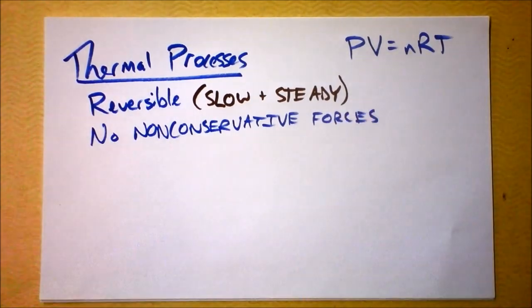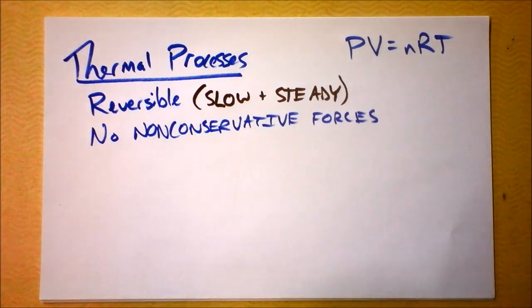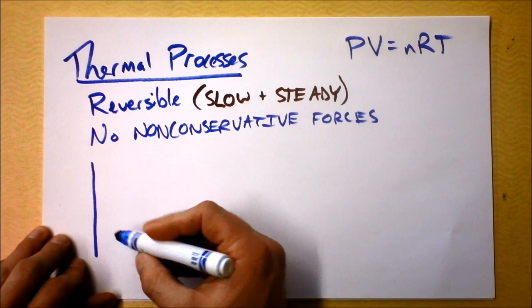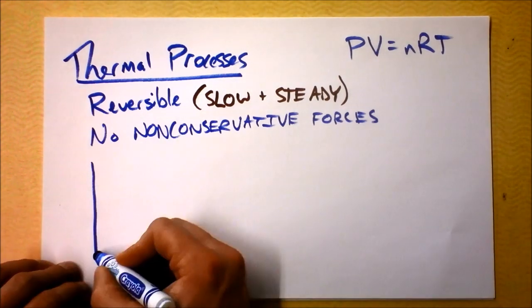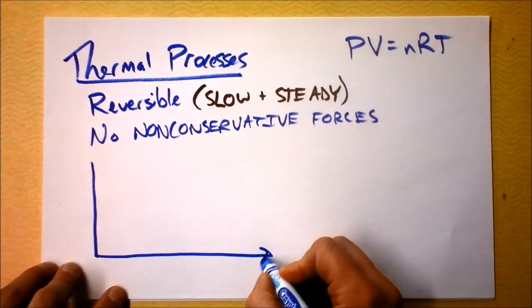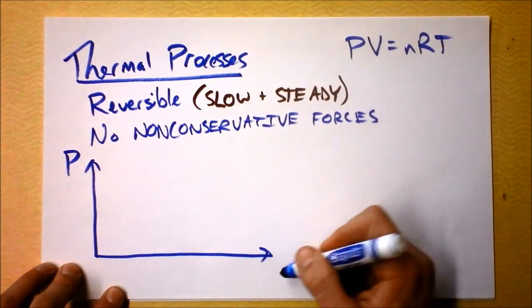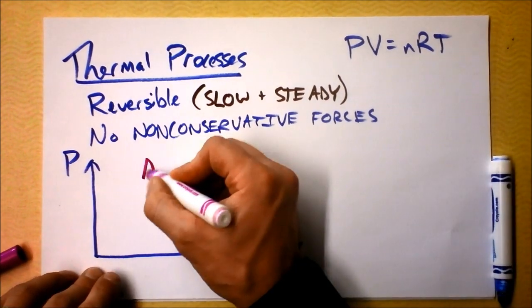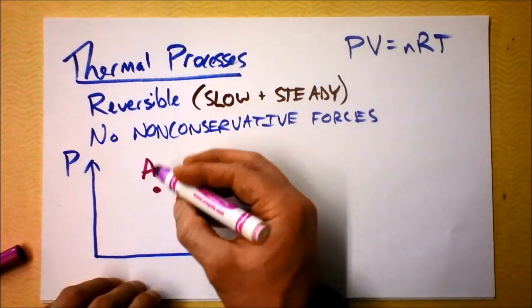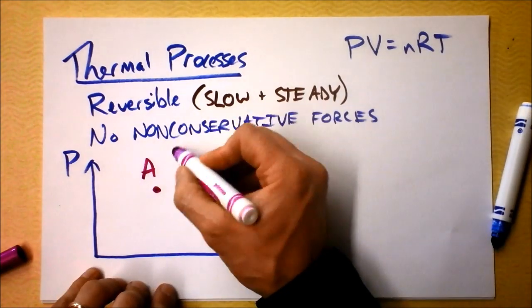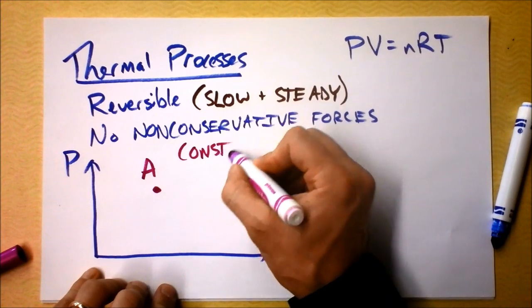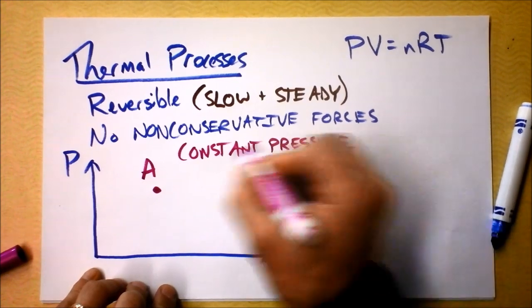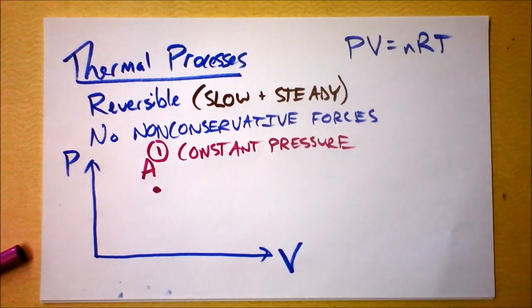As we jump into this, I want to talk first about constant pressure. So I'm going to take a cylinder and show you what the graph looks like too. The graph I want to make is pressure versus volume — we're going to be making this graph a lot. If I start at point A with my gas at a certain pressure, and it's going to be constant pressure — let's call it number one, constant pressure — that is one thing we can hold the same.